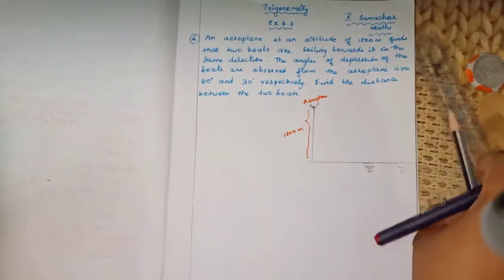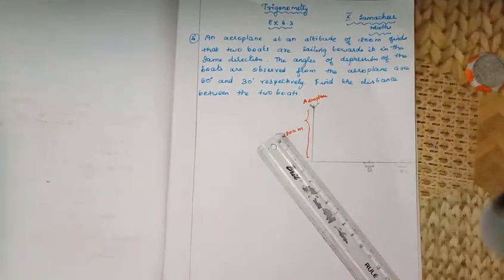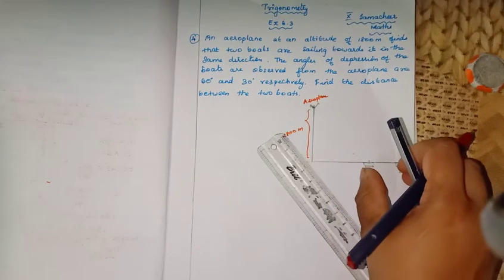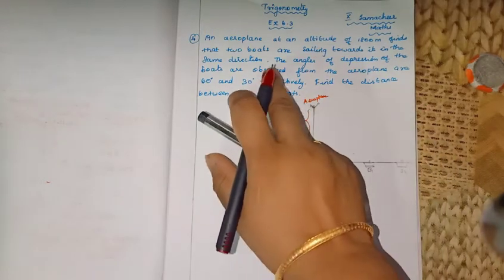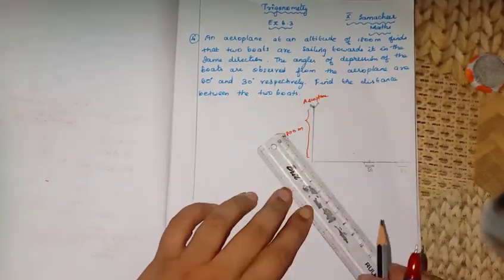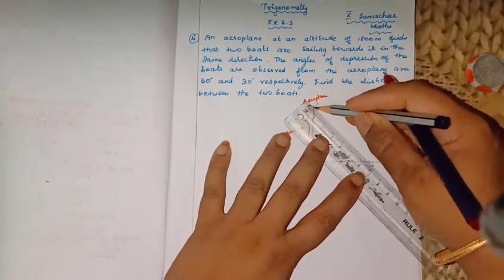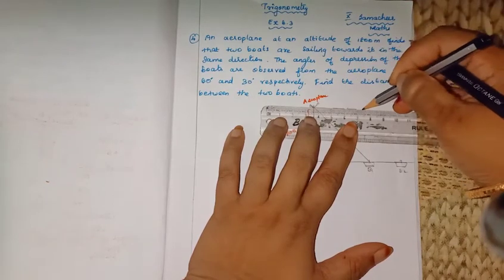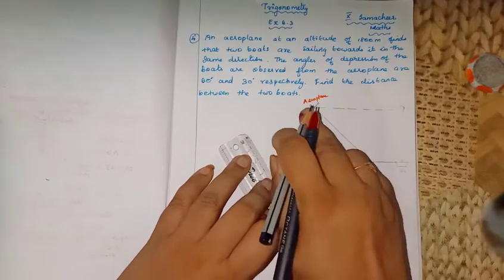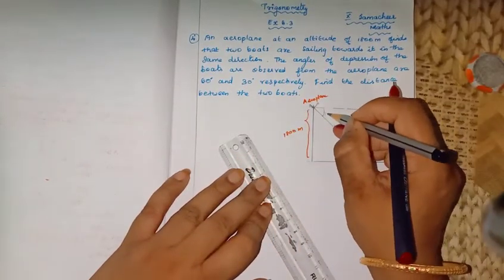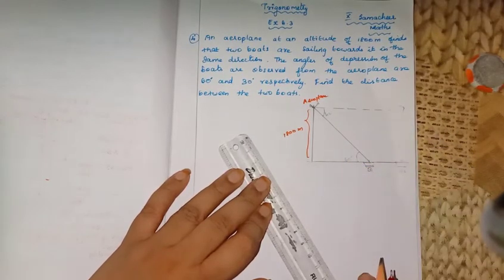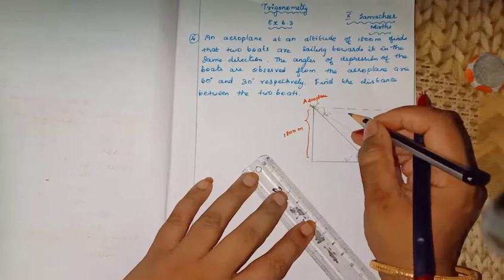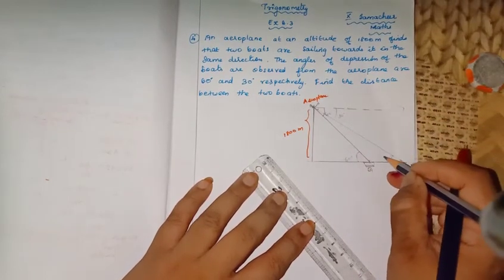The boats are sailing in the same direction as the aeroplane's path. The angles of depression of the boats, as observed from the aeroplane, are 60 degrees and 30 degrees. For the first boat the angle of depression is 60 degrees, and for the second boat it is 30 degrees — both measured from the horizontal line of sight parallel to the ground.